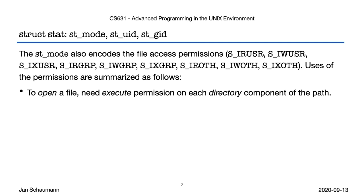Verify that this holds by creating a directory containing multiple deeper subdirectories. Change into that directory and create a file, then remove execute permissions from your parent directory. Can you still open the file you created? Try both a relative and an absolute path name.